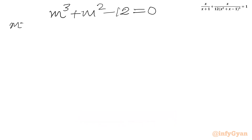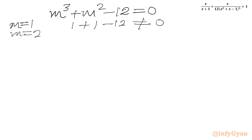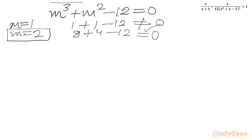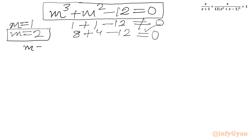If I plug in m equal to 1: 1 cubed plus 1 squared minus 12 is not 0. If I plug in m equal to 2: 2 cubed is 8, 2 squared is 4, and 8 plus 4 minus 12 equals 0. Yes! So m equal to 2 is one root of this cubic equation, meaning m minus 2 is a factor.